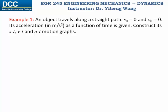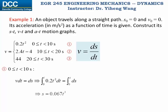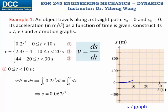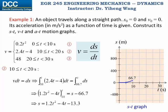We organize the velocity-time function as a piecewise function. Now we use the kinematic equation relating velocity to position to find the s-t function. For the first time period, integrating gives position equals 0.067t³, and at the end of this period the position is 66.7 meters. Continuing to the second period with correct integration limits, we sketch the function and calculate that at the end of the second period the position has increased to 387 meters.